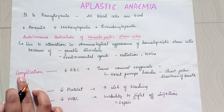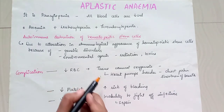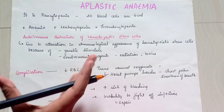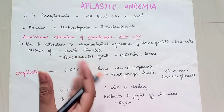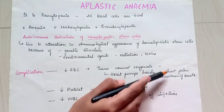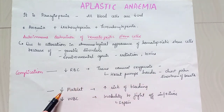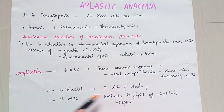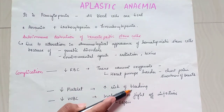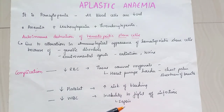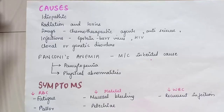Some of the complications are: if there is decreased RBC, tissue cannot be oxygenated, which leads the heart to pump harder, causing chest pain and shortness of breath. If there is a decreased platelet count, there is an increased risk of bleeding. Decreased WBC causes an inability to fight off infections, leading to sepsis.